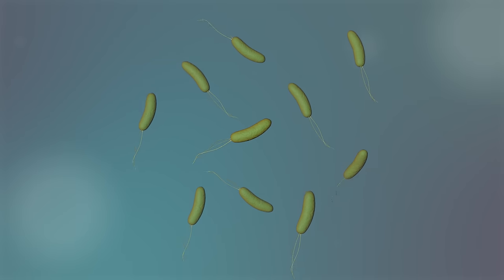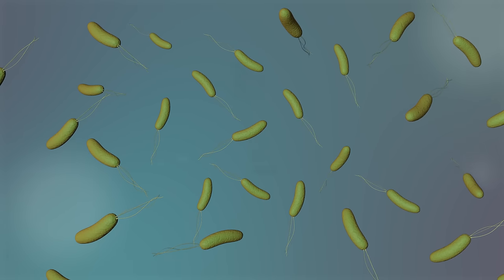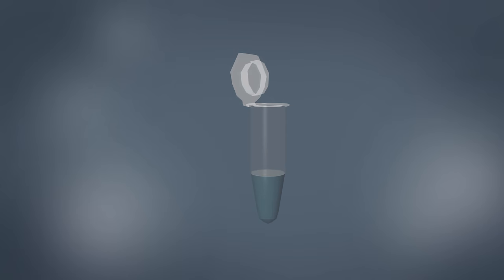This makes it possible to produce lots and lots of copies of it as the bacterial cells multiply. The DNA is then isolated from the bacteria and sent for sequencing.